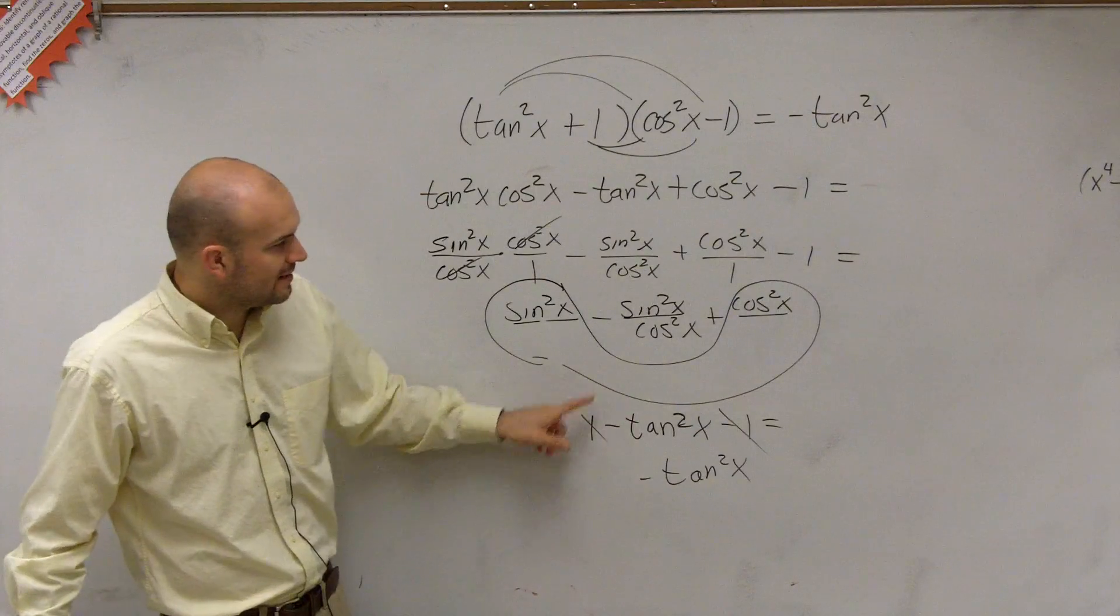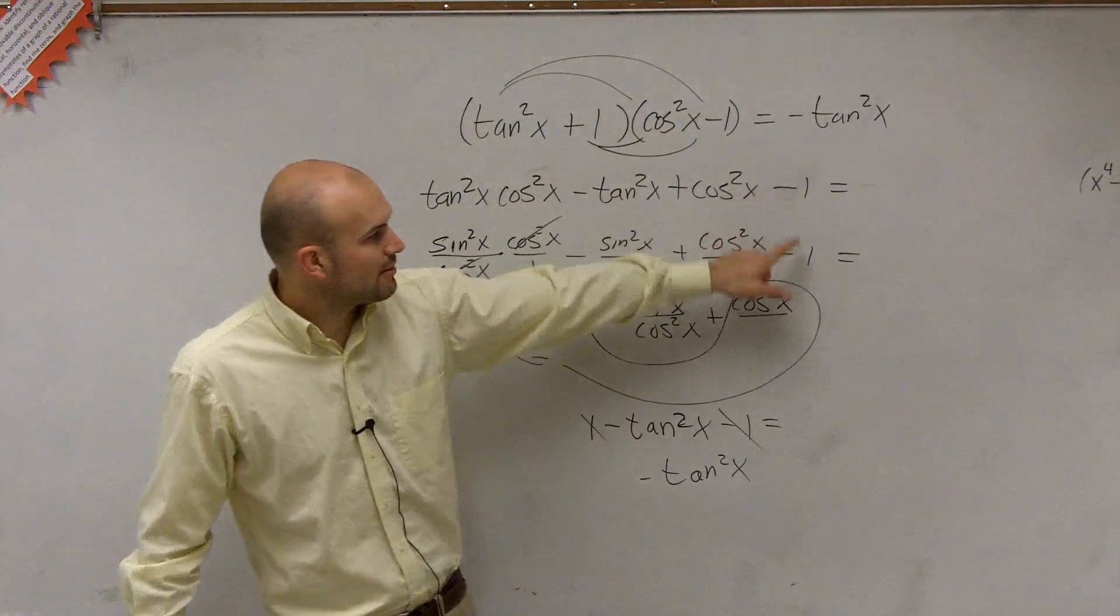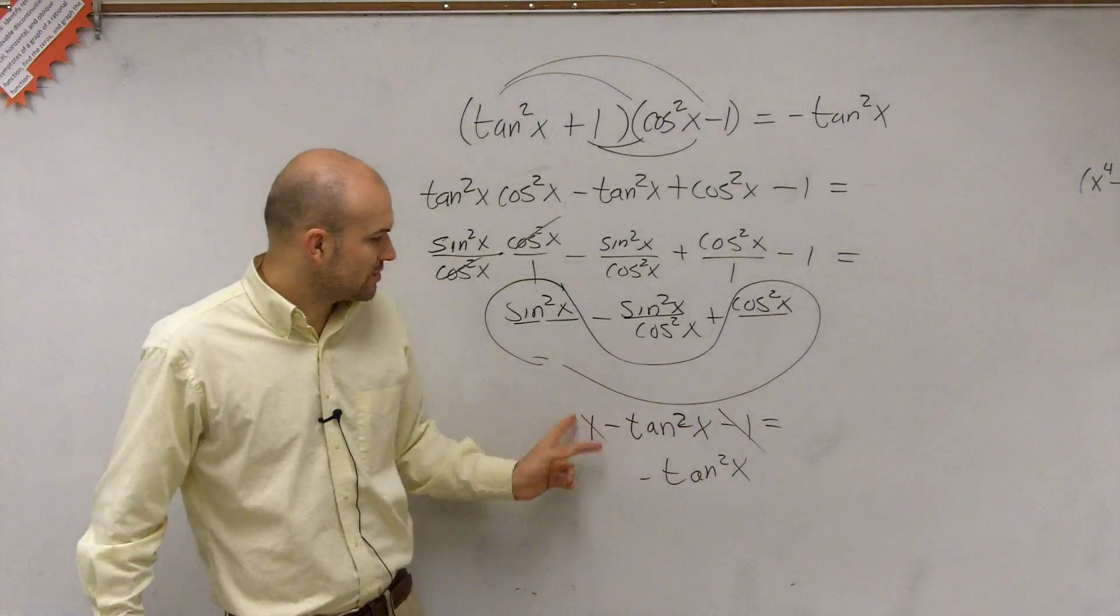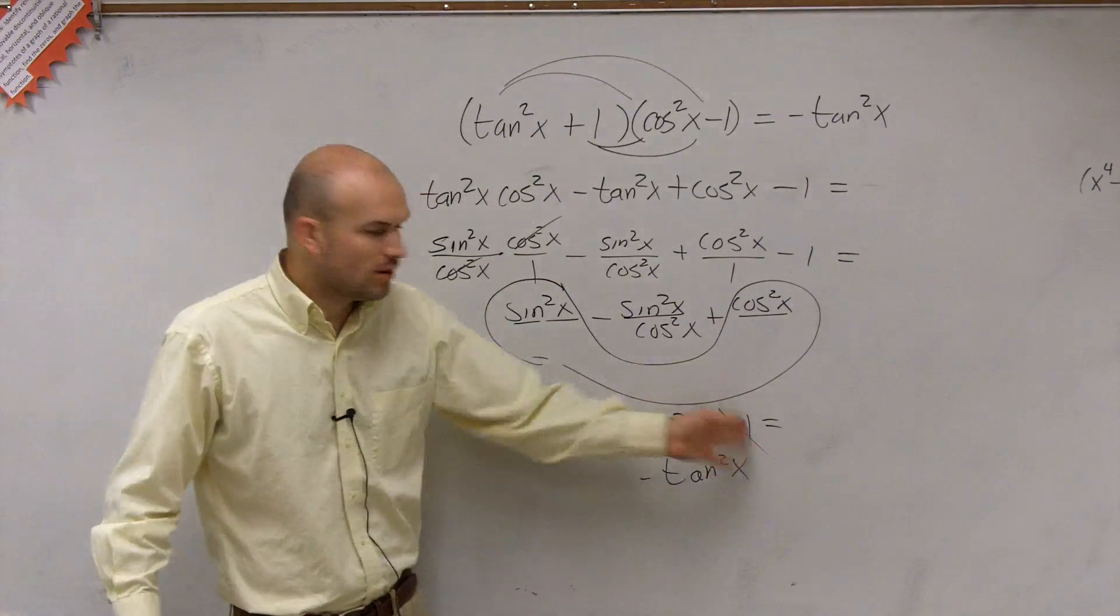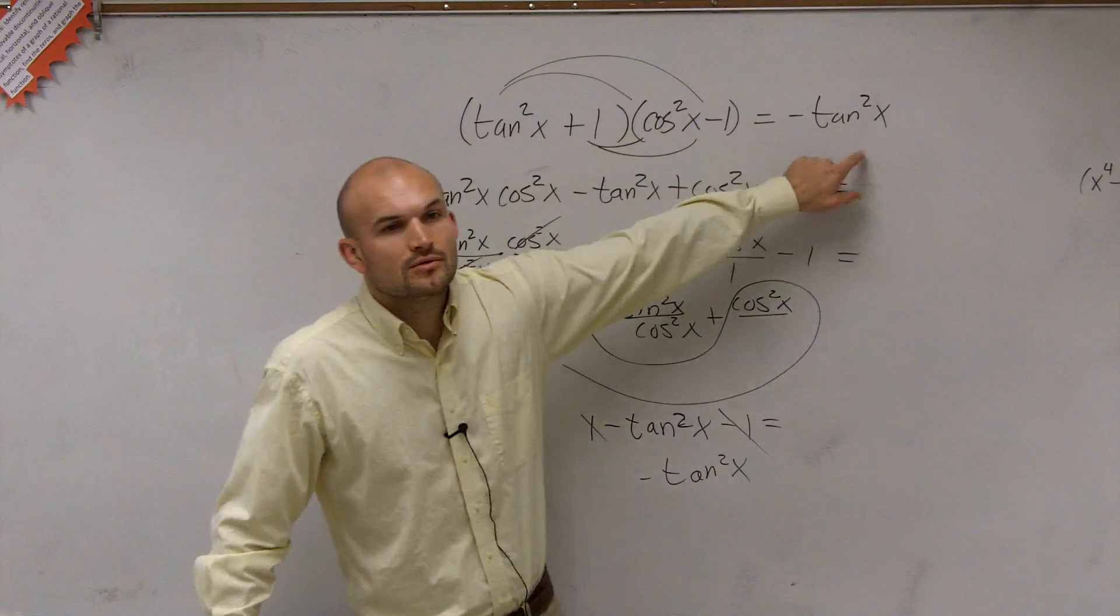Sine squared plus cosine squared equals 1. So that equals 1 right there minus, that's really tangent squared. So I convert that back to tangent. And then my original problem said minus 1. So 1 minus tangent squared minus 1. The 1's now go to 0, so just leave me with negative tangent squared of x, which is on the right side.